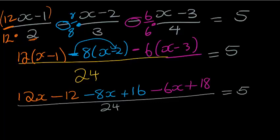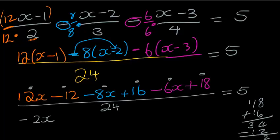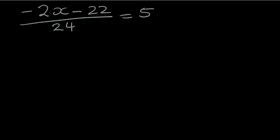So now we are going to simplify. I'm going to say 12 minus 8 minus 6. Minus 8 minus 6 is minus 14. So 12 minus 14 is going to be minus 2x. Check me if you agree with me. Next up, I've got positive 16, I've got positive 18, and I've got negative 12. So I'm saying 18 plus 16 is going to give me 34 minus 12 is going to give me 22. Minus 2x minus 22 over 24 is equal to 5. Are we in agreement? Double check me.